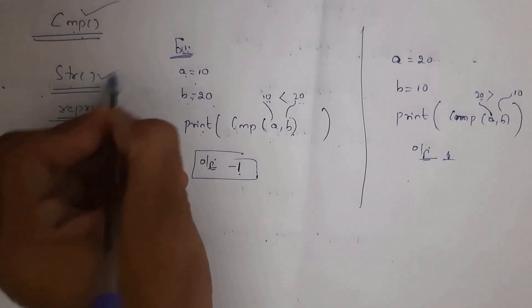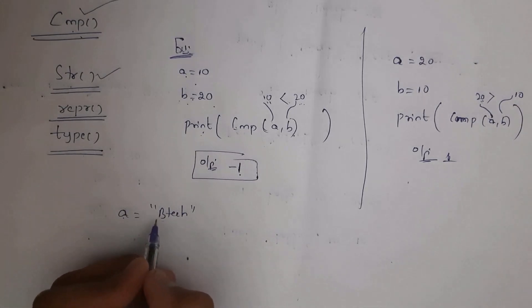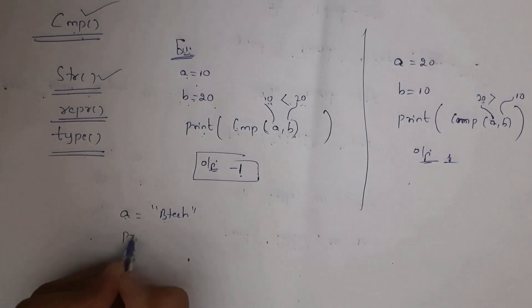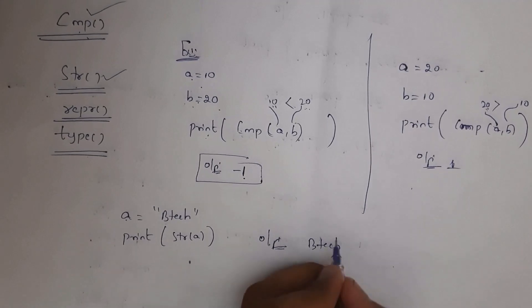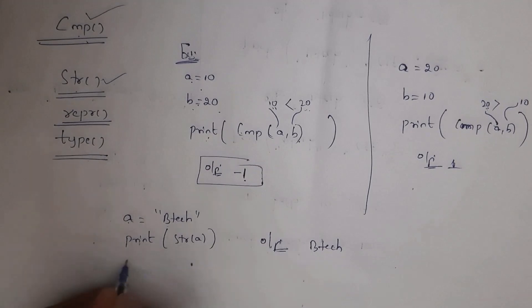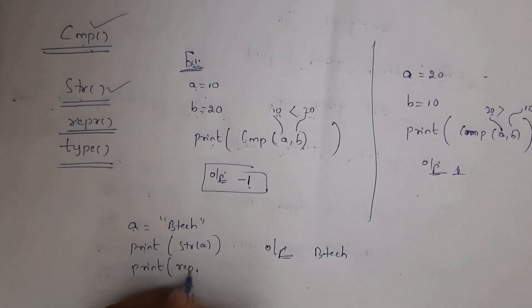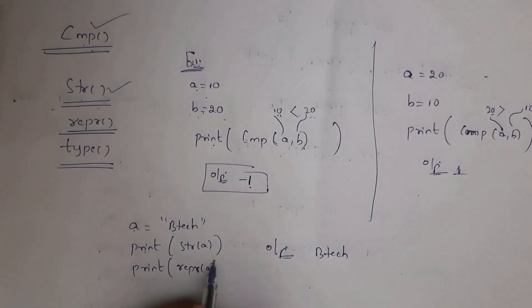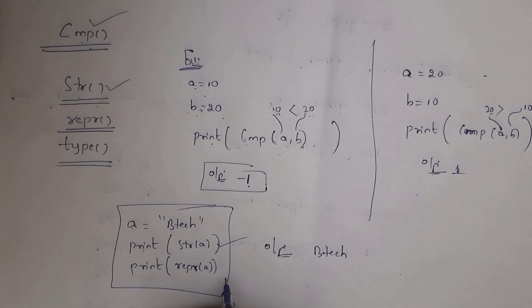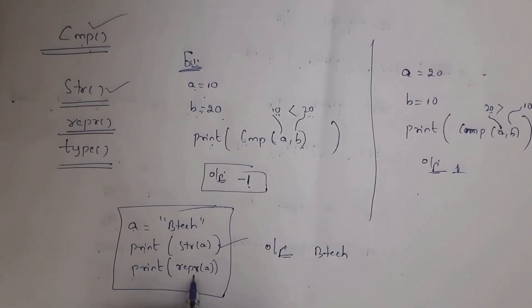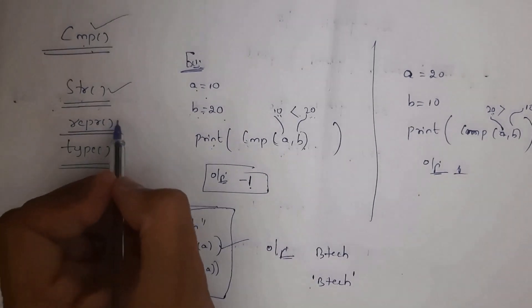The str function converts a value to its string representation. For example, a='B Tech': str(a) outputs B Tech without quotations. The repr function also represents the value, but encloses strings in single quotations. So repr(a) outputs 'B Tech' in single quotations. This is the use of the str and repr functions.